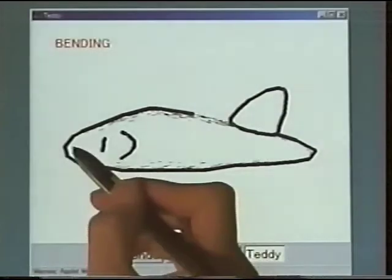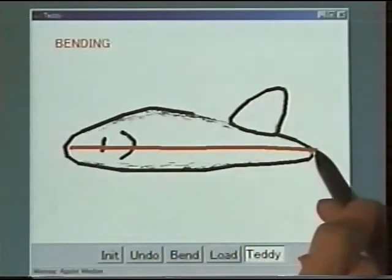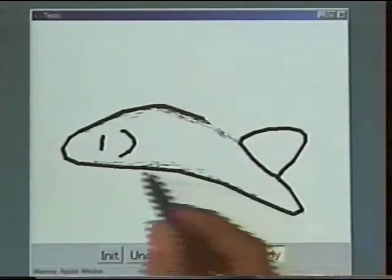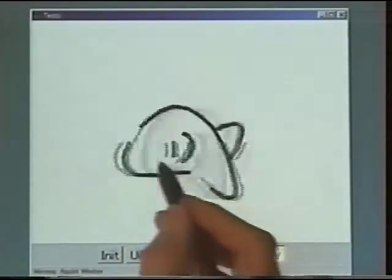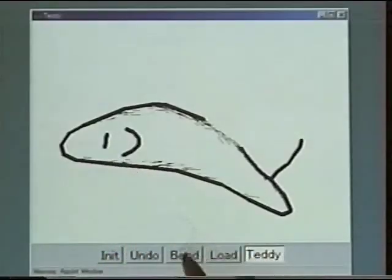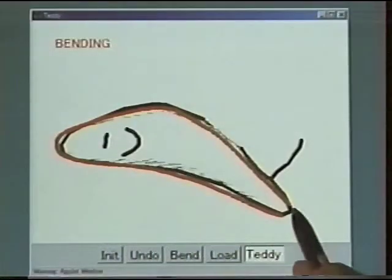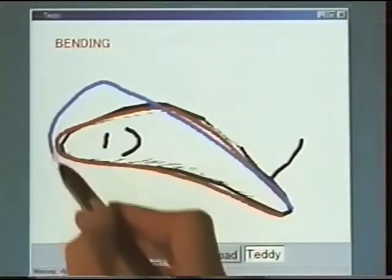When you want to bend the model, press the bend button to start the bending operation. And draw a reference stroke and then a target stroke. The system modifies the shape of the model based on your strokes. You can use this to deform your model in many different ways.